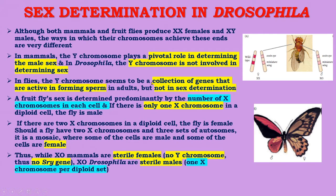But in Drosophila, the Y chromosome is not involved in determining sex. In flies, the Y chromosome seems to be a collection of genes that are active in forming sperm in adults, but not in sex determination. A fruit fly's sex is determined predominantly by the number of X chromosomes in each cell. XO Drosophila are sterile males, whereas XO mammals are sterile females due to absence of the SRY gene.